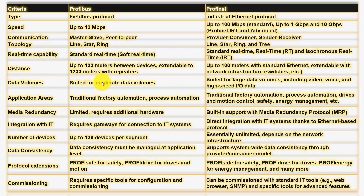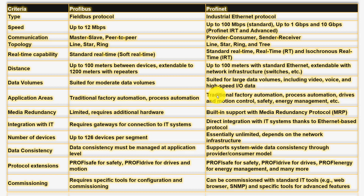For data volumes, Profibus is limited and suited for moderate data flows, while Profinet, being Ethernet-based, can handle large data volumes including video and voice high-speed data. For application areas, Profibus has traditionally been used in factory and process automation, while Profinet covers factory automation, process automation, and motion control. Since Profinet can transfer large amounts of data, it also supports motion control applications as well as safety and energy management.